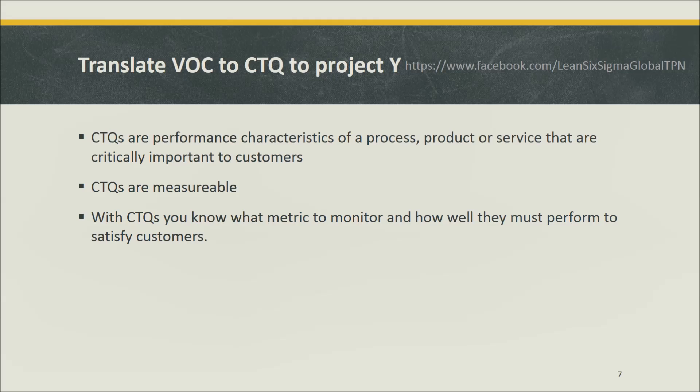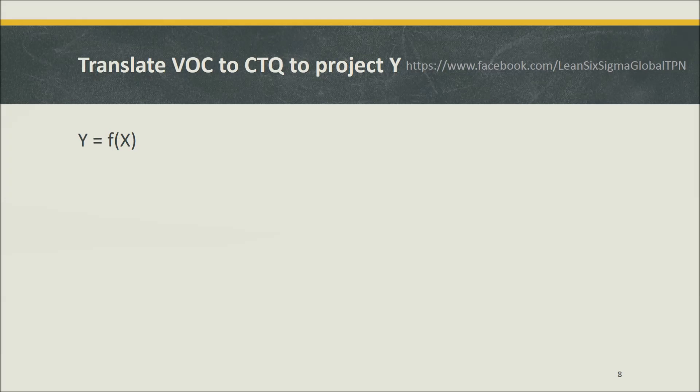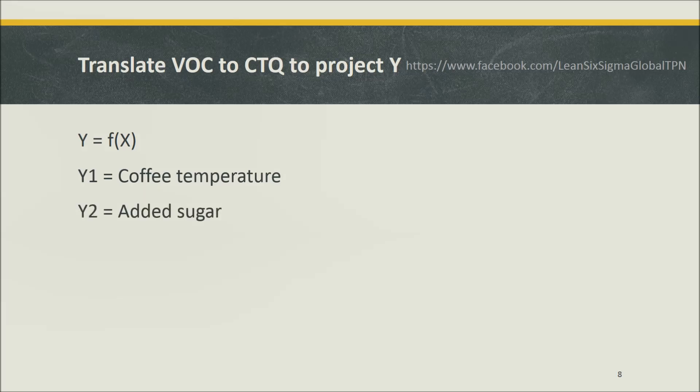If you are doing a Six Sigma project, you definitely benefit from learning about CTQs. The analysis premise of a Six Sigma project is Y is a function of X. In our example, one Y is coffee temperature, second Y is added sugar, and the other Y is delivery time. And X are all factors affecting coffee temperature, added sugar, and delivery time, respectively.